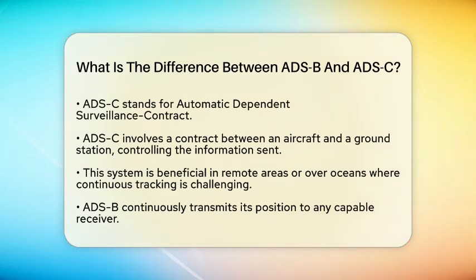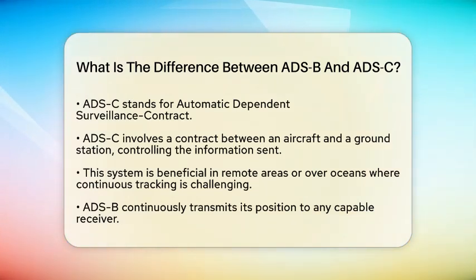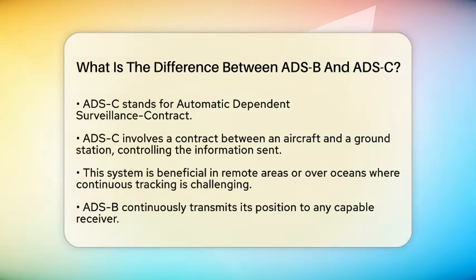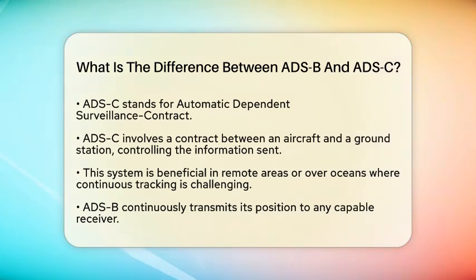One major difference lies in the communication method. ADS-B continuously broadcasts its position to any capable receiver. In contrast, ADS-C sends information based on a predefined agreement with a ground station. This means that while ADS-B is always active, ADS-C operates on a more scheduled basis.